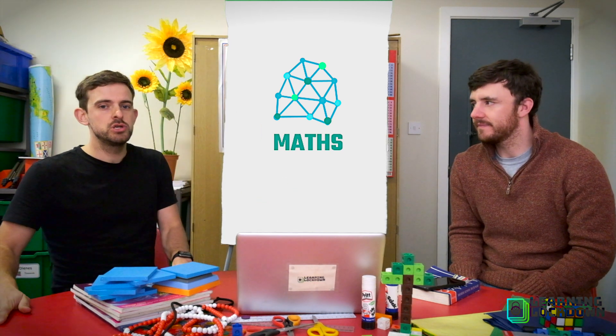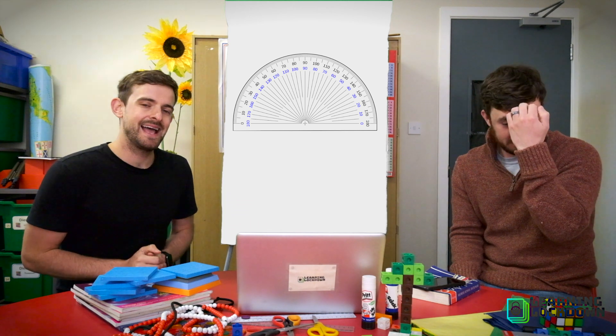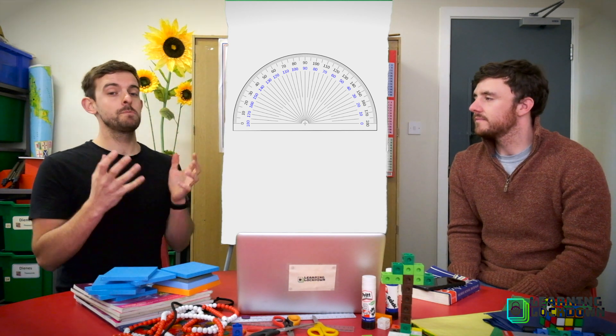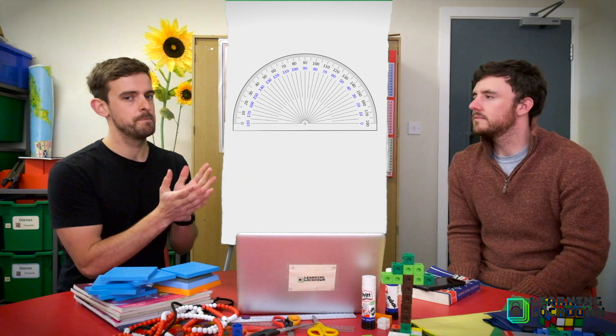Now yesterday we introduced you to a protractor, not a professional tractor as Mr S thought. And what do we use a protractor for? Well we used it to measure angles, so points of turn or where two lines meet.